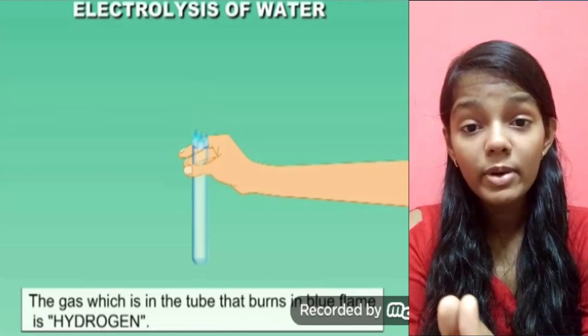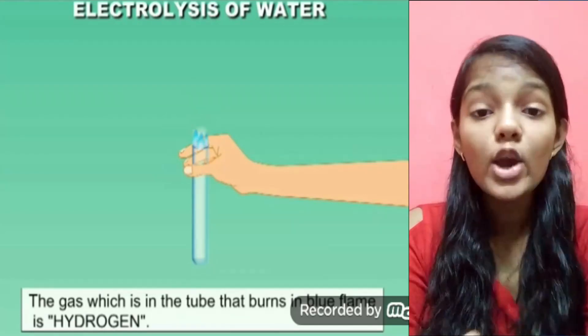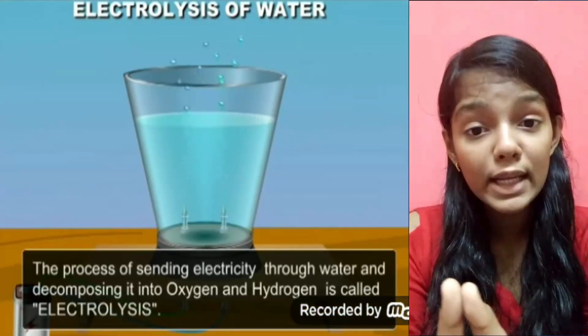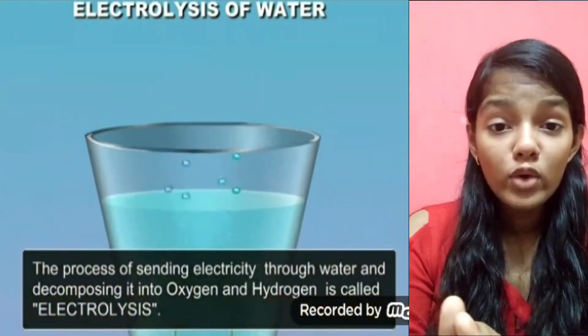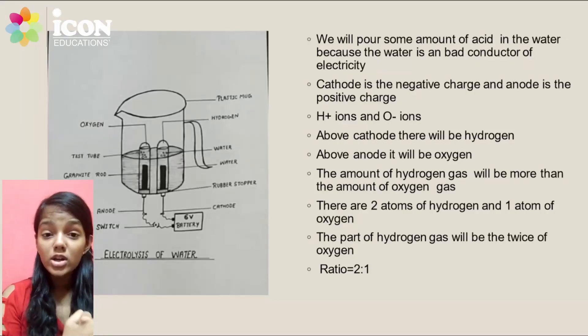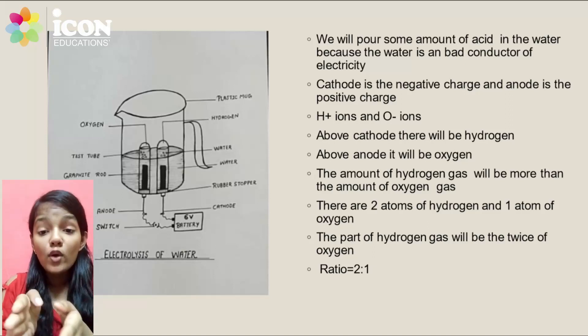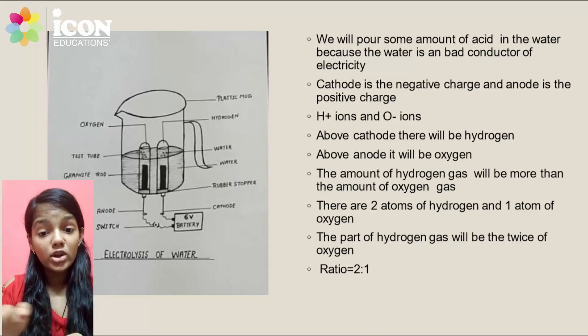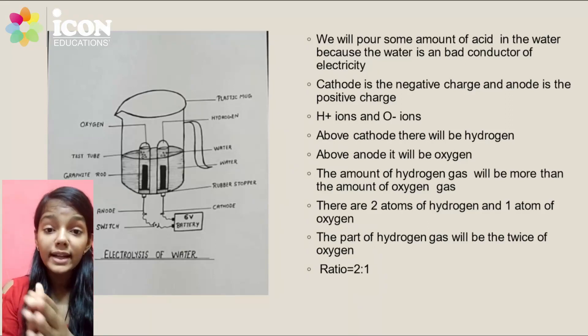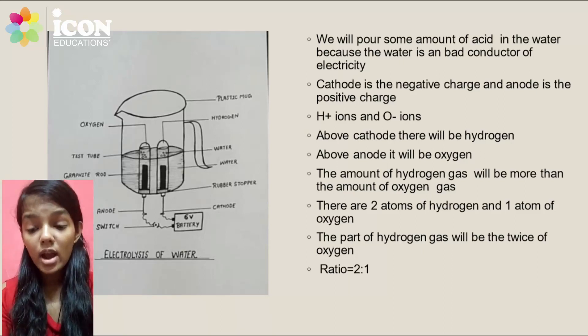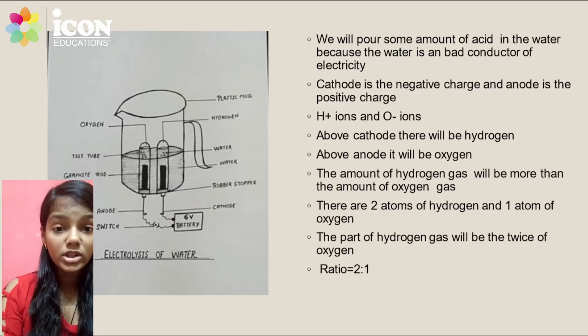To know which gas is in which test tube, we recall from previous standards the concepts of cations and anions. Cations carry positive charges and anions carry negative charges. Similarly, electrodes have two kinds: cathode and anode. Cathode carries negative charge and anode carries positive charge.